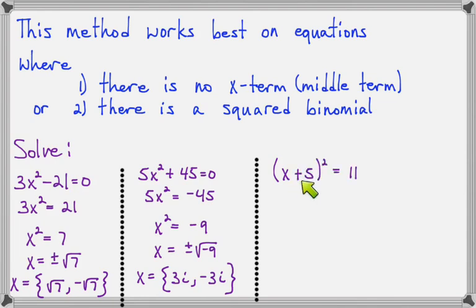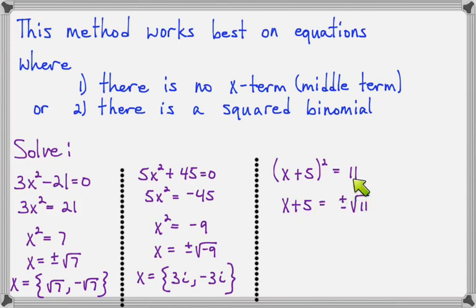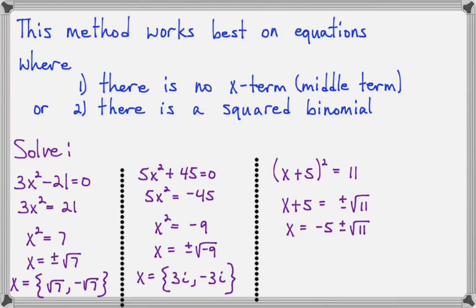Last example: x plus 5 squared equals 11. I have a squared binomial, so the square root property is the right approach. Taking the square root of both sides, the left side becomes x plus 5 and the right side is plus or minus the square root of 11. To isolate x, I subtract 5 from both sides, giving x equals negative 5 plus or minus the square root of 11. So the two answers are negative 5 plus the square root of 11 and negative 5 minus the square root of 11.